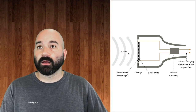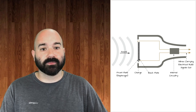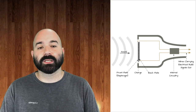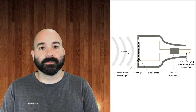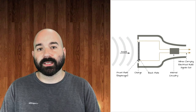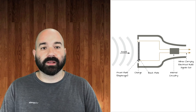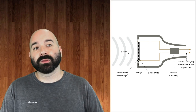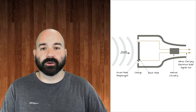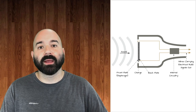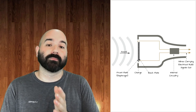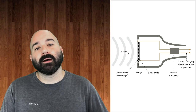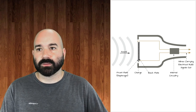Electret condenser microphones hold a permanent charge. Their advantage is they don't require phantom power and can be less expensive. Their disadvantages are that they may require batteries, and their response characteristics can change over time—as that permanent charge isn't truly permanent, the frequency response can change with it.